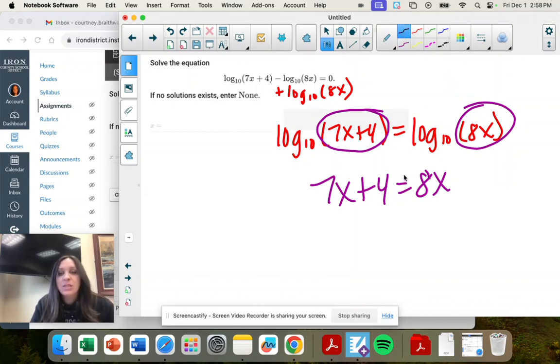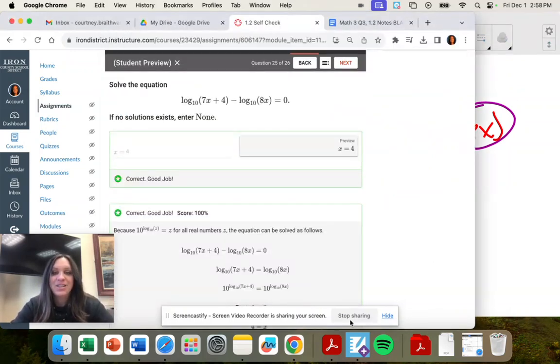And luckily, this one's not quadratic. There's no x squareds. So I'm going to subtract 7x from both sides. x equals 4. Woohoo! That was quick compared to the last one.